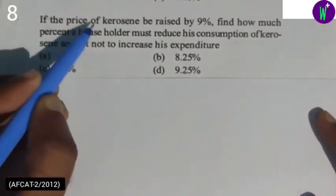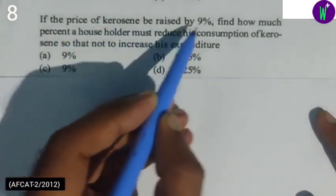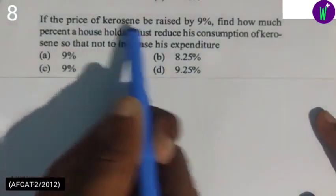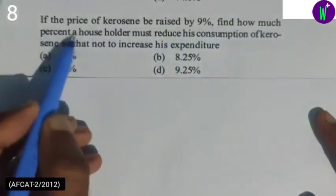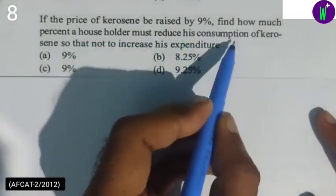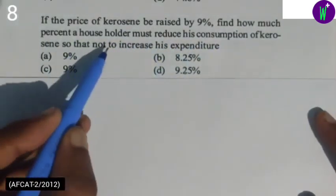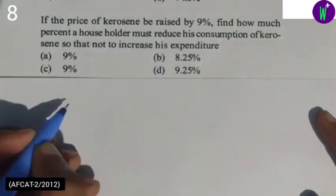Next question is, if the price of kerosene be raised by 9%, kerosene's price has increased by 9%, find how much percent a householder must reduce his consumption of kerosene so that not to increase his expenditure.